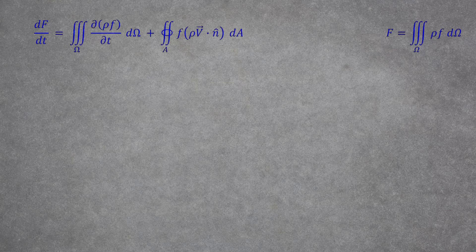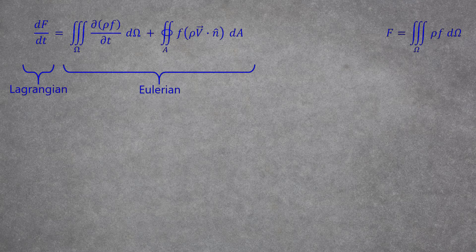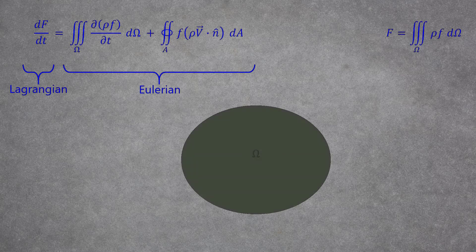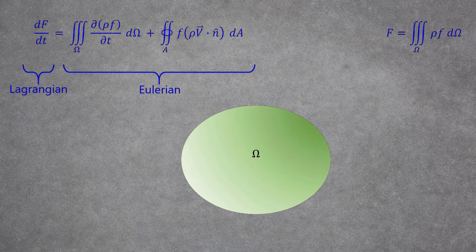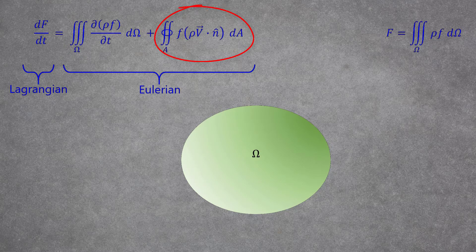The Lagrangian time derivative of f, that is, an extensive property associated with the fluid parcel, is equal to a combination of terms in the Eulerian framework. The two terms represent the time variation of the f property in the control volume and the flux of this property across the control volume boundaries.